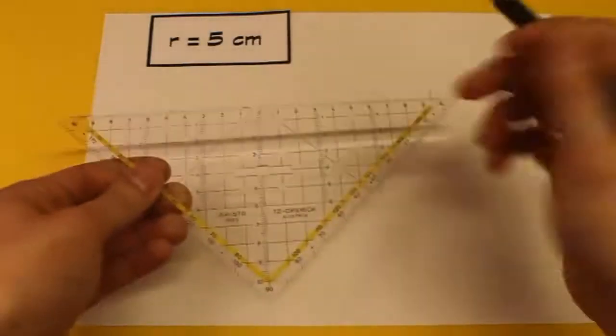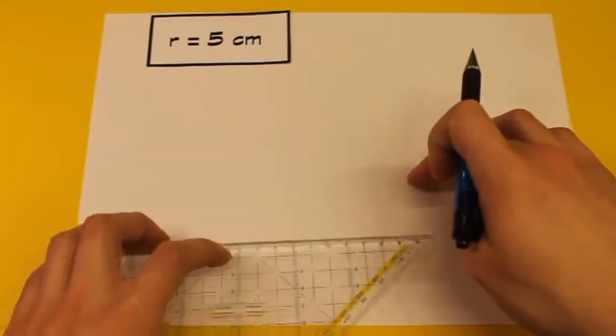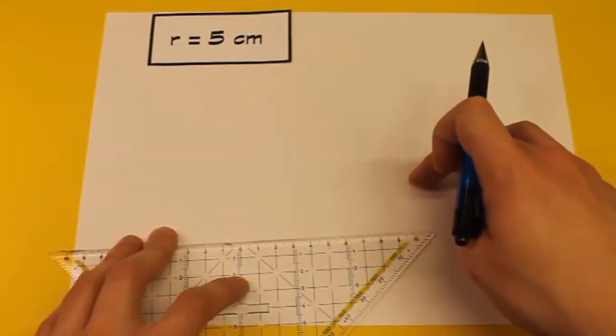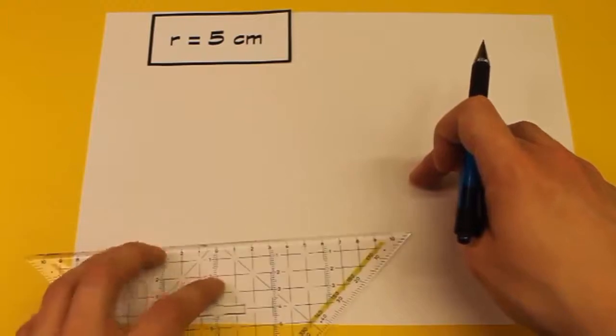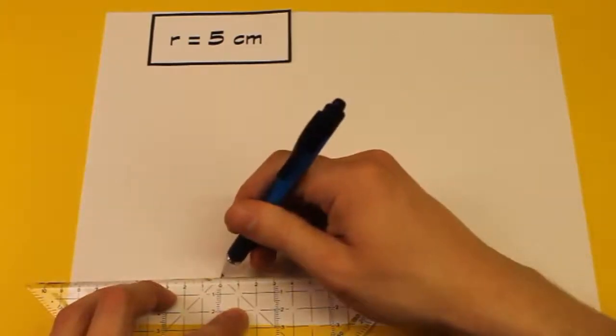Ich empfehle euch jetzt, vor allem anfangs, solange ihr noch nicht so viel Übung habt, immer folgendes: Zeichnet euch eine Hilfslinie, die genauso lang ist wie der Radius. Nehmen wir also das Lineal und zeichnen wir eine 5 cm lange Hilfslinie.